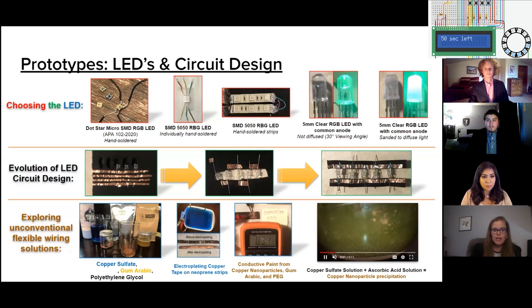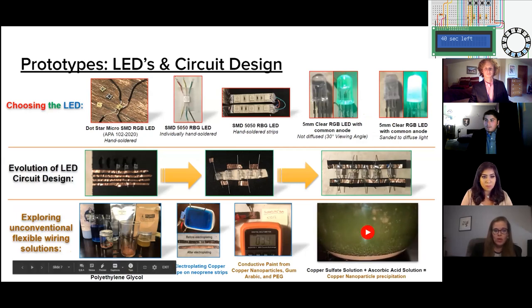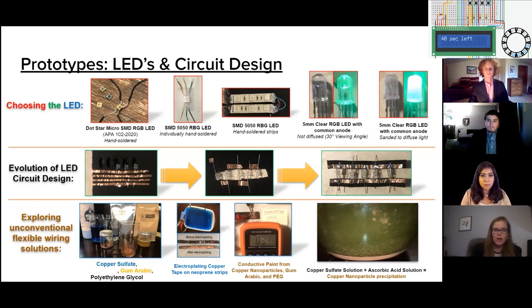Moving to the inside of the koozie, some of our biggest challenges were determining the best LED and the circuit layout that would be integrated to our final product. We explored several types of LEDs and circuit designs and dabbled with flexible unconventional wiring techniques. We settled on our final design consisting of clear RGB LEDs with a common anode and sanded to enhance diffusion of light, all daisy chained together on electroplated copper tape rails.